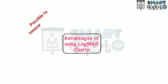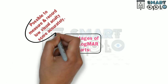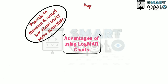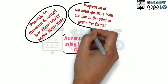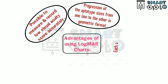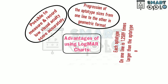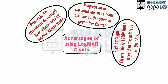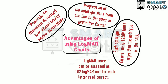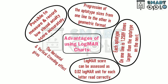What are the advantages of using the LogMAR charts? It is possible to measure and record low visual acuity scores accurately. There is a progression of optotype sizes from one line to the other in geometric format — each optotype on one line is 1.2589 times larger than the optotype on the next. The LogMAR score can be assessed as 0.02 LogMAR units for each letter read correctly. The horizontal and vertical crowding effect gives a better estimate of visual acuity.